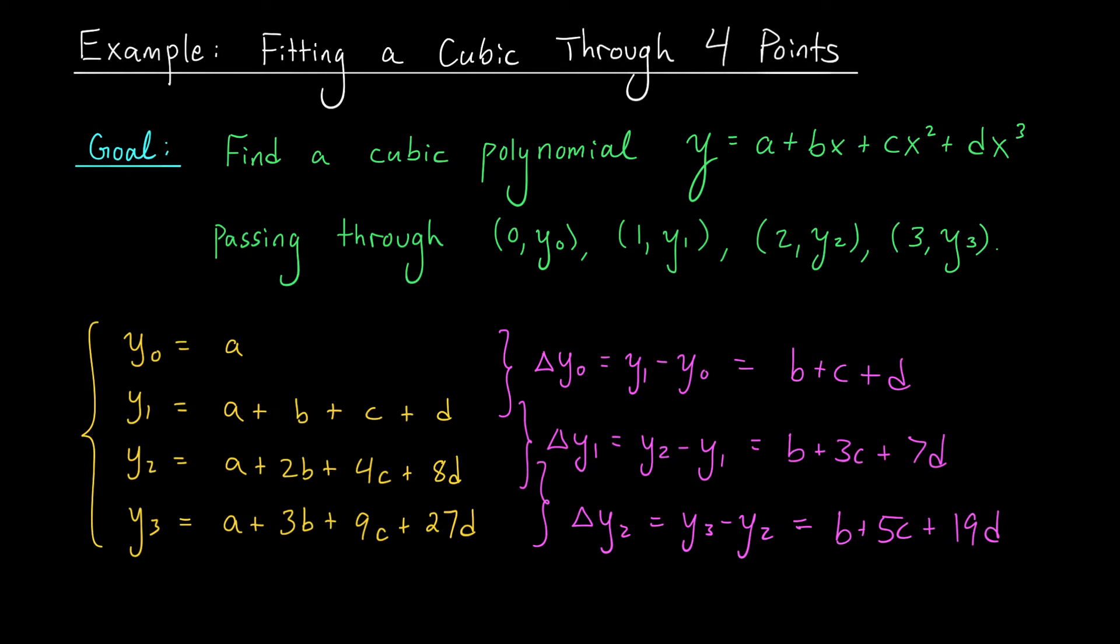Now would you look at this. By considering these delta y terms, which by the way are called first finite differences of our system, we end up with a new system with three equations and three unknowns. It's simpler, right? Furthermore we see there's a b in each equation in our system which means I could probably do the exact same thing to the new system, take differences of successive equations and kill off yet another variable.